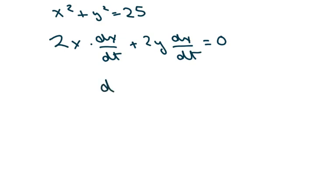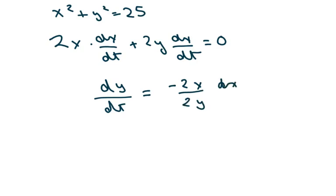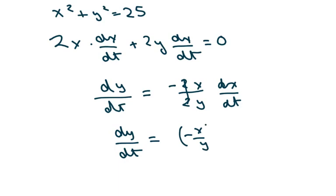So when I solve, the derivative of y with respect to t is going to equal negative 2x over 2y times dx/dt. That cancels out, so we get dy/dt equals negative x over y times dx/dt.